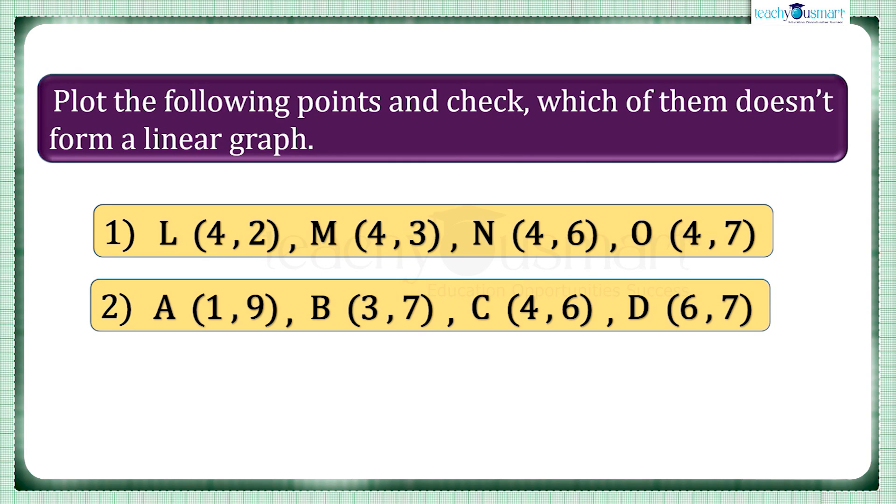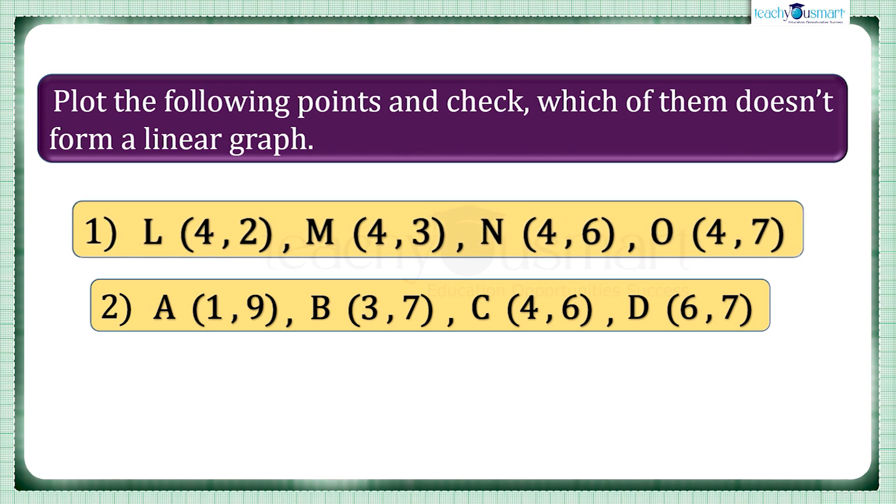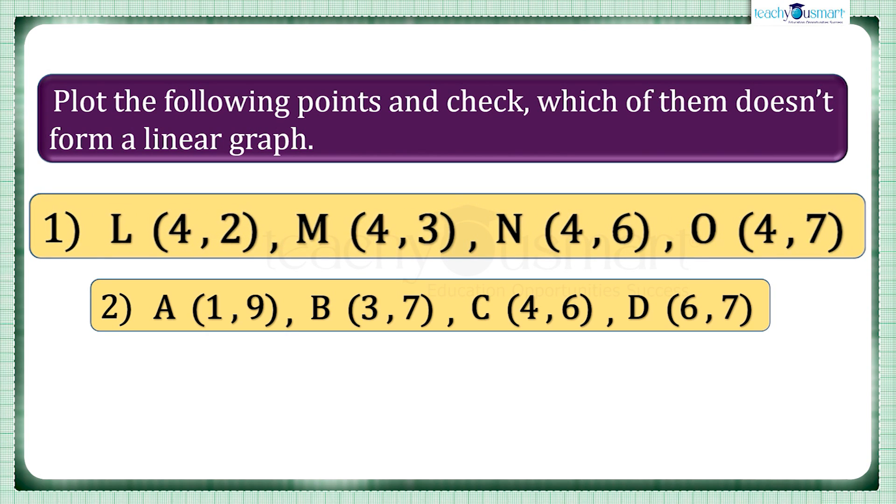Let's check which of them doesn't form a linear graph. Take the first set of points: L (4,2), M (4,3), N (4,6), and O (4,7). For locating these points we need a Cartesian plane, so draw the x-axis and y-axis.